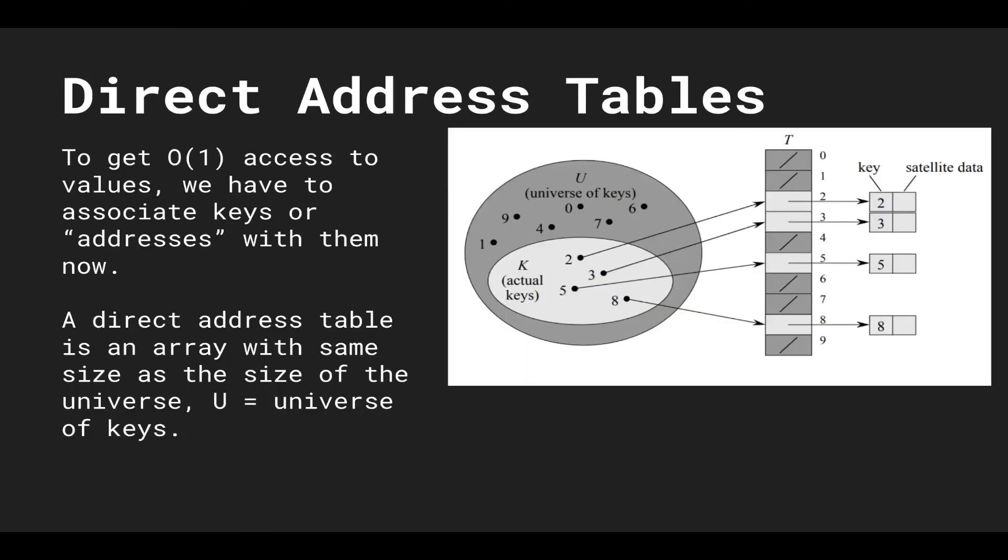The first solution of trying to solve the problem of getting constant time operations is direct address tables. And the idea of direct address tables is we store values at addresses and we'll know addresses beforehand and then we can just directly go to that address.